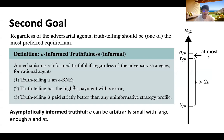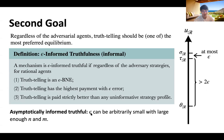Furthermore, we want truth-telling to be a preferred equilibrium: the truth-telling strategy profile gives utility at some level, an arbitrary rational strategy profile sigma_r cannot bring extra utility more than epsilon above tau, and if rational agents play uninformed strategies, then utility drops below — the gap between tau and theta must be strictly larger than 2 epsilon. If this holds, we call the mechanism epsilon-informed and truthful. We call a mechanism asymptotically informed truthful if epsilon can be made arbitrarily small with large enough n and m.